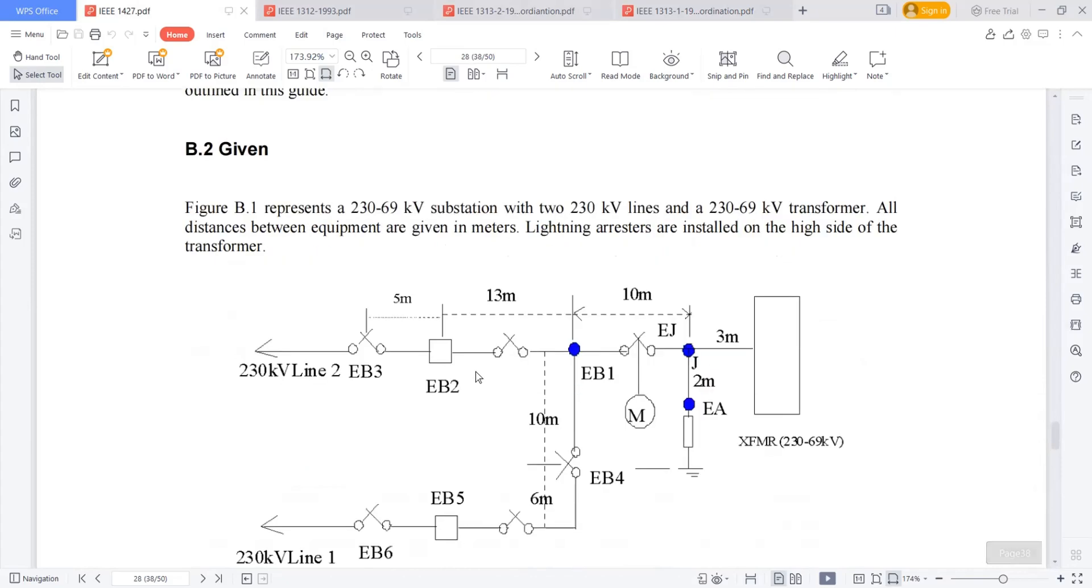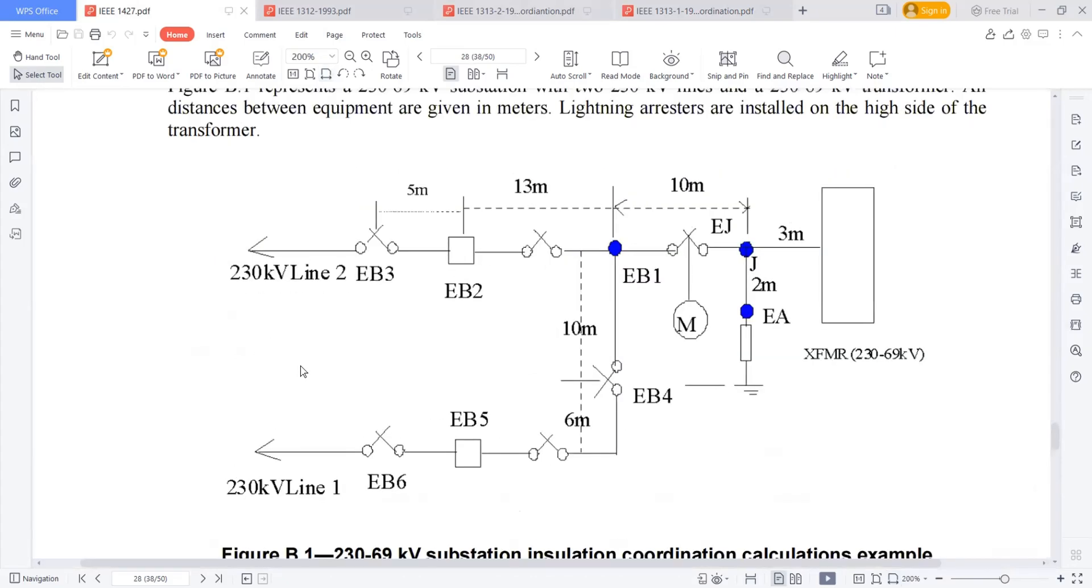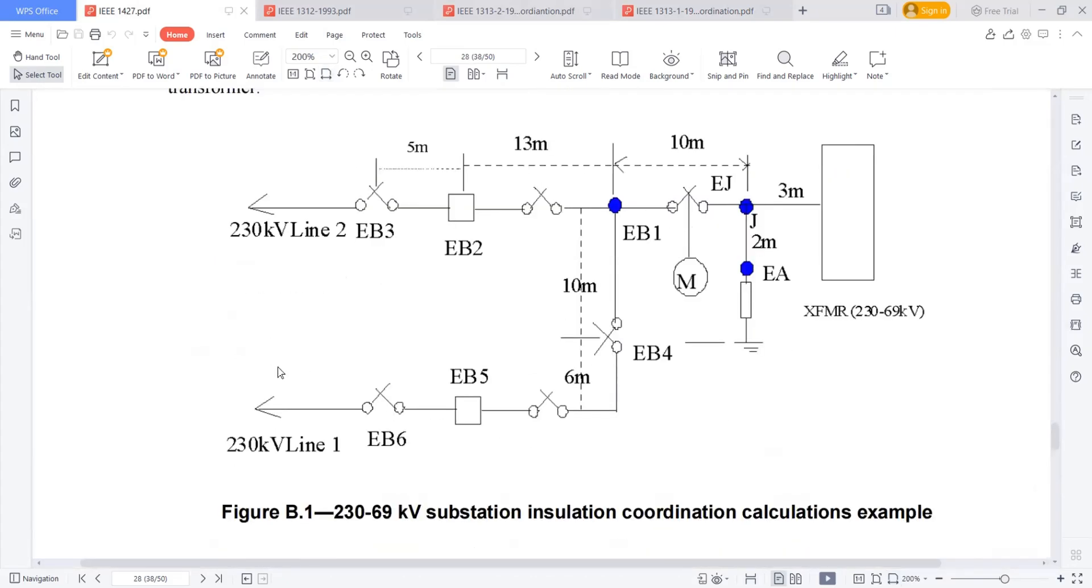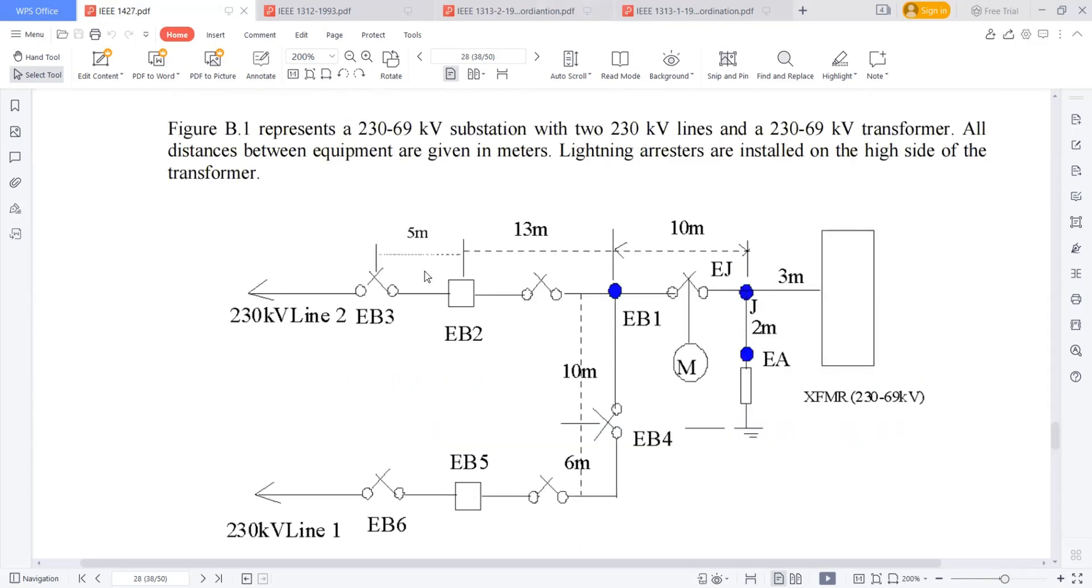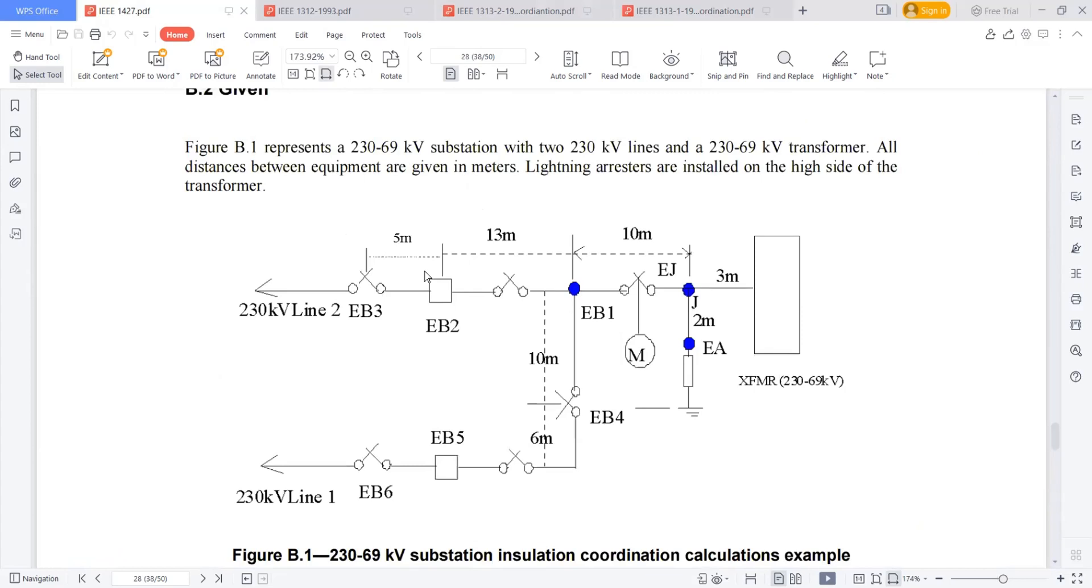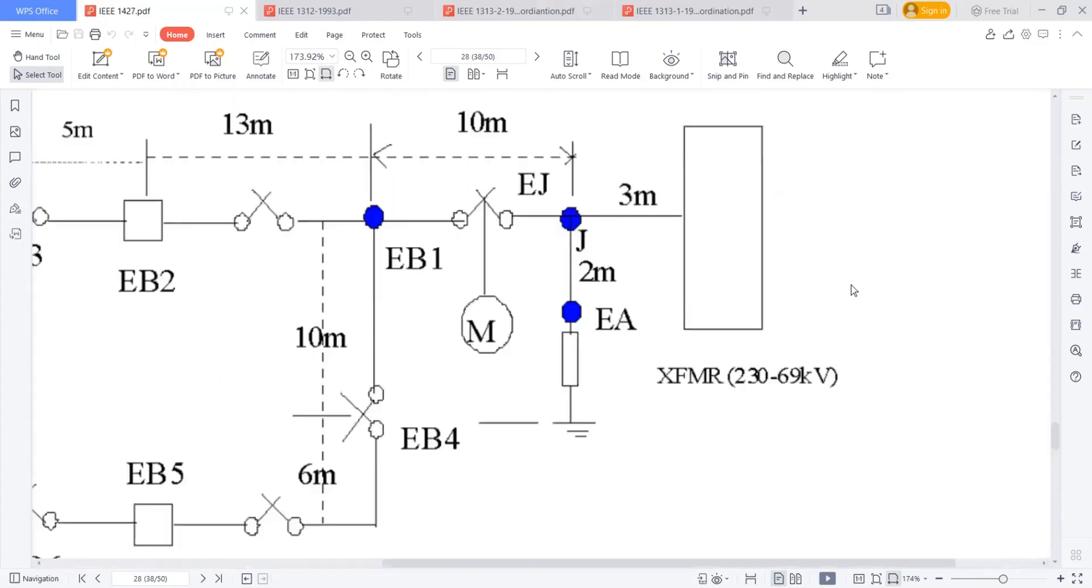This is my application. Here, the example was given. This is my transformer and this is my lightning arrestor and this is my breaker motor operated one, isolator, isolator, isolator, and the breakers and isolators and the two 220 kV lines going out. This is my single line diagram.